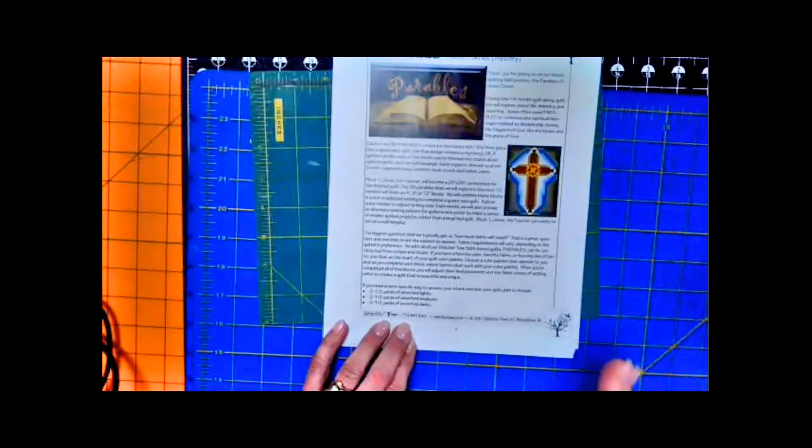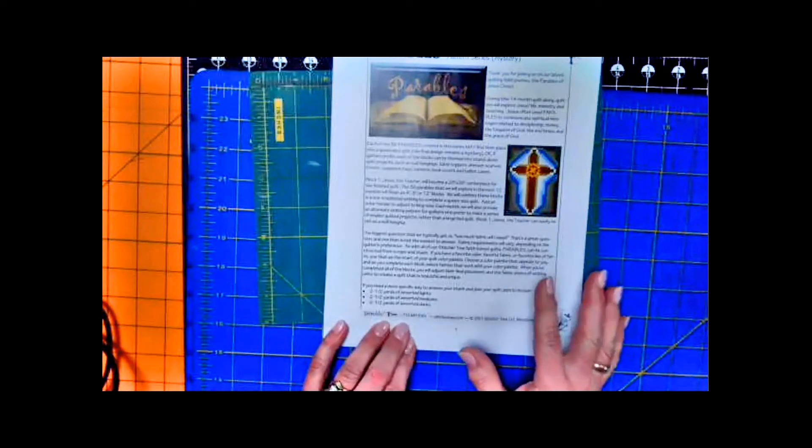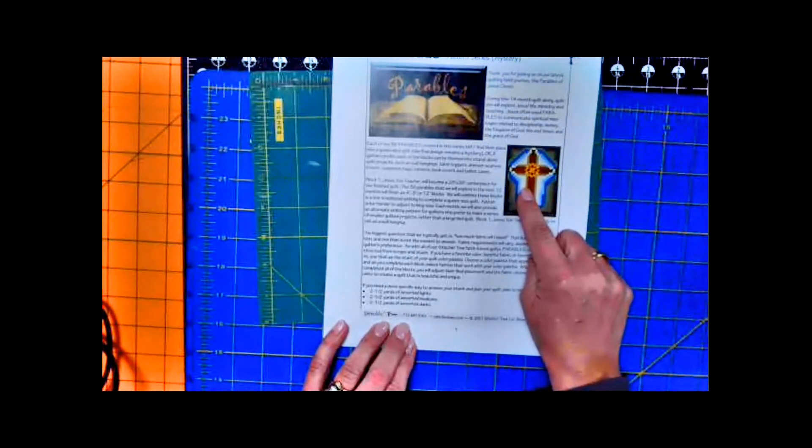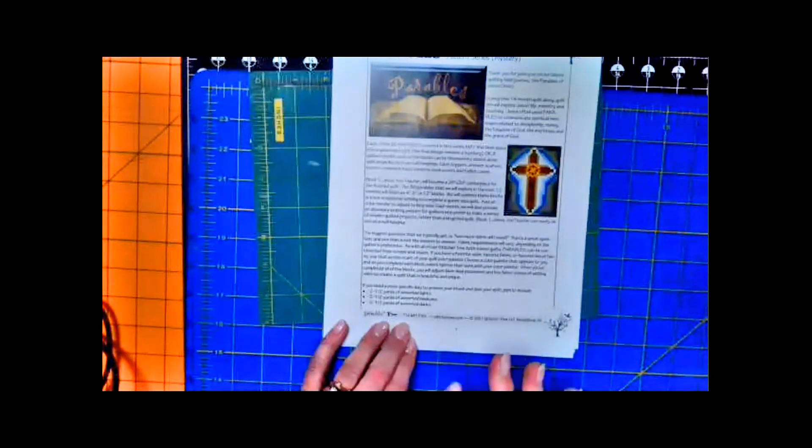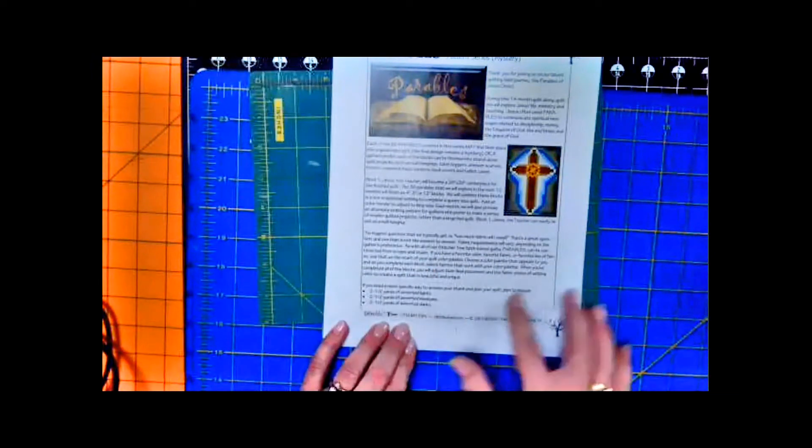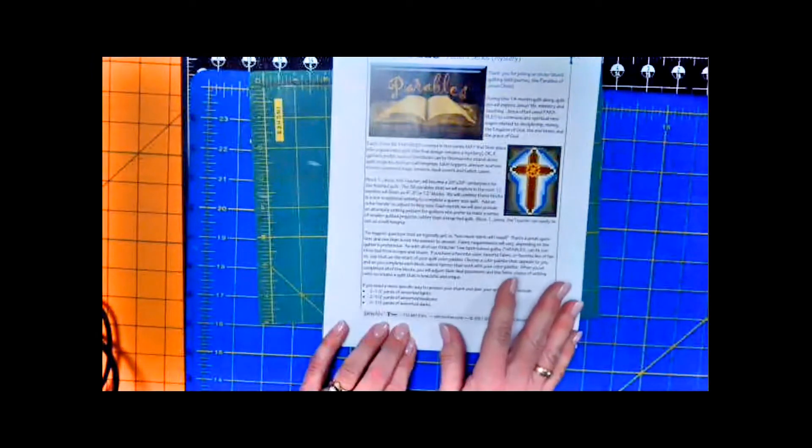Other people might take that background fabric, which we use as a highlight fabric in Jesus the Teacher, and they might choose to have other fabrics that kind of are of a similar hue. That's fine too. And still others might change that background fabric in every block, and every block might be a different color. It is entirely up to you, your preference, and what you desire. Your finished quilt will be as unique to you as what each one of these blocks will be.